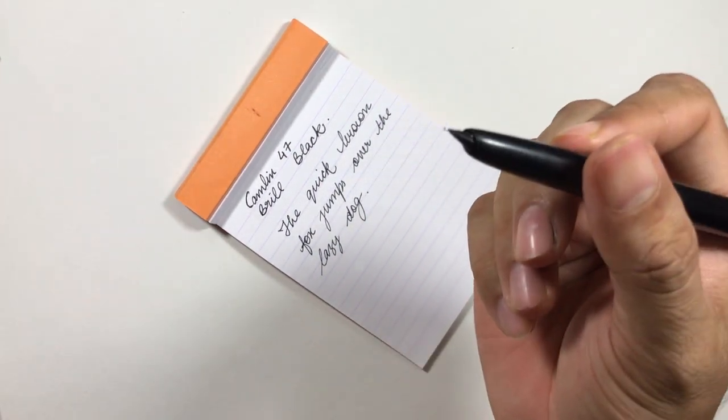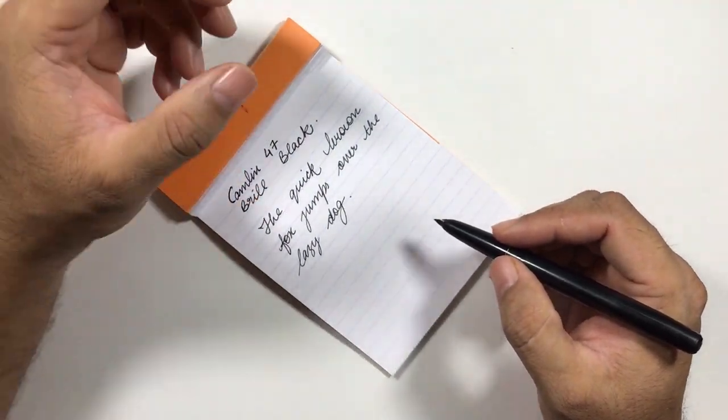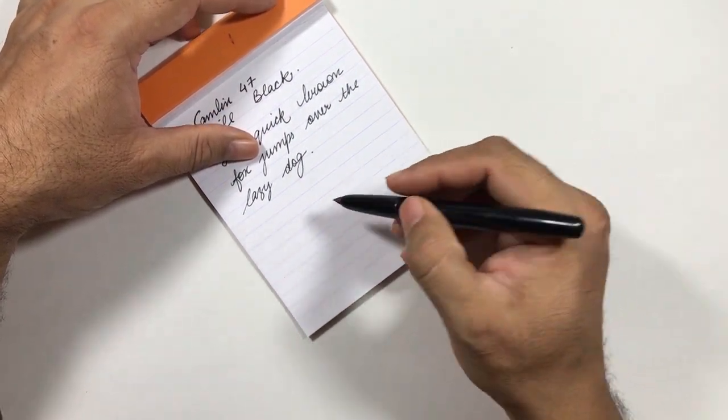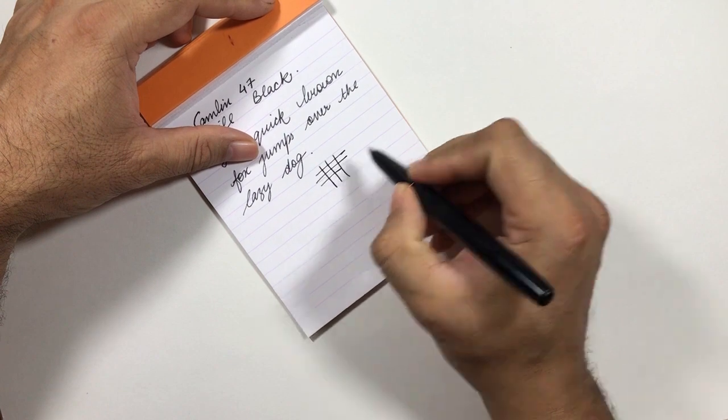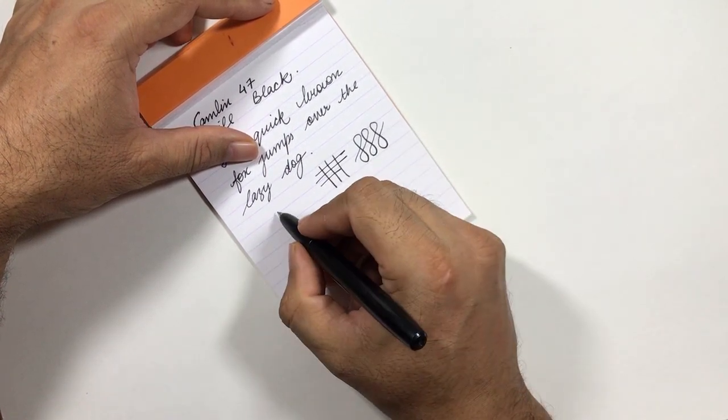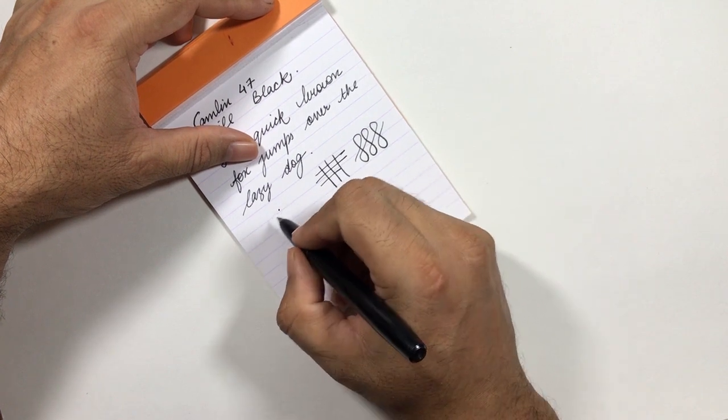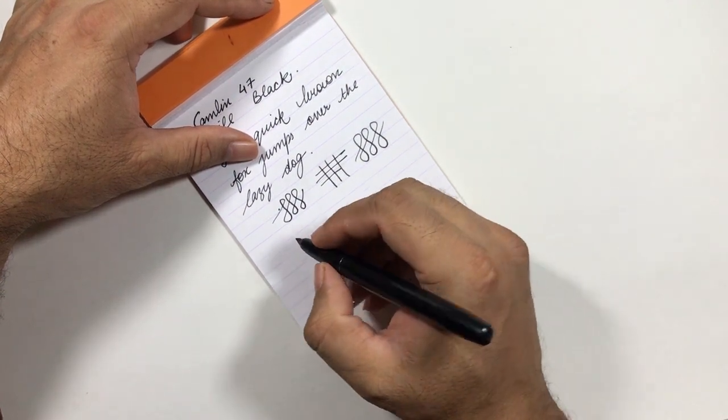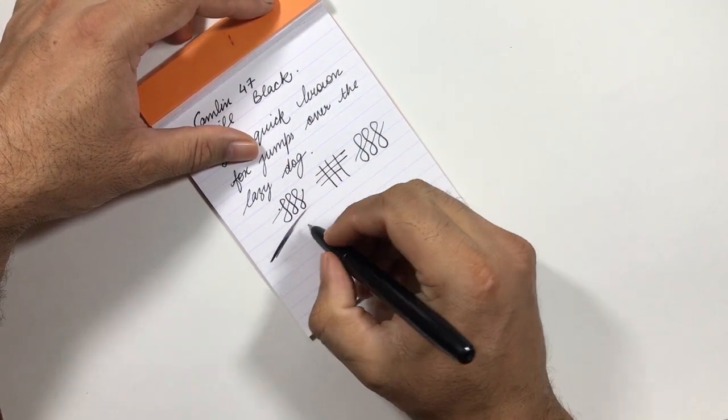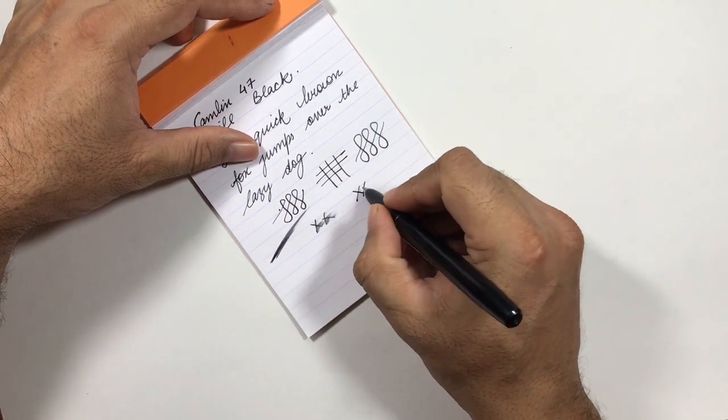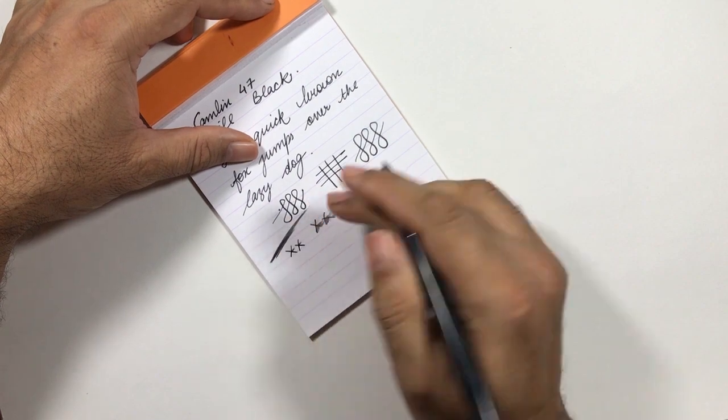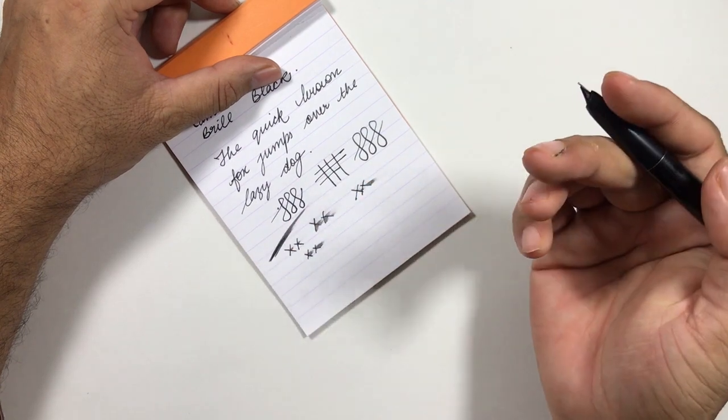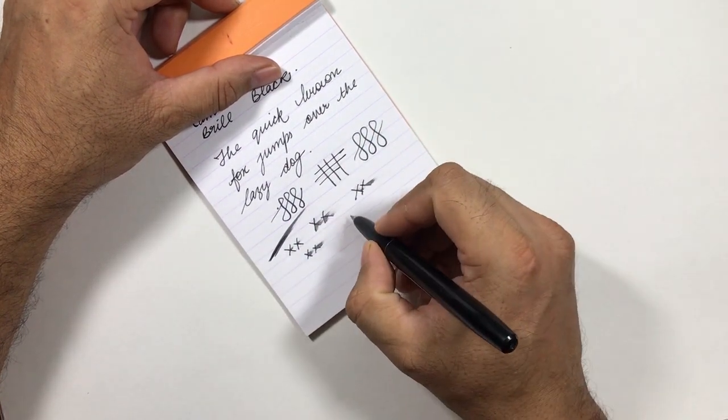This nib is not very smooth. It's a fine nib so it gives some feedback but it is not that scratchy. It's a steel nib so it's a hard nib and does not have much line variation. If you push it hard it can give some line variation but we should not push it too hard because this is a steel nib. It's a quite wet writer, not very wet but medium. Since it is a fine nib it is expected to be a little bit on the drier side but it is not that dry. It's okay.